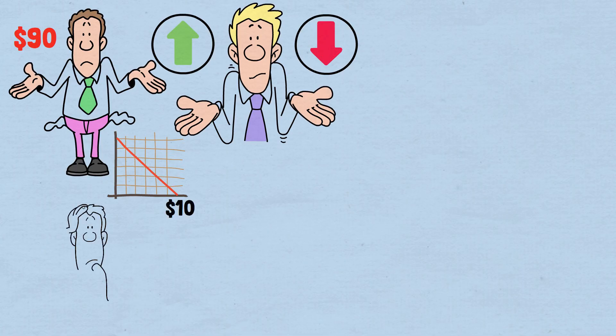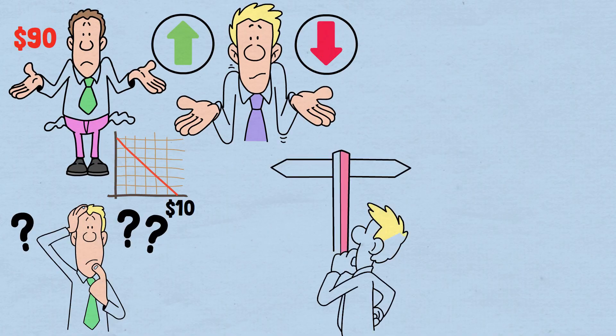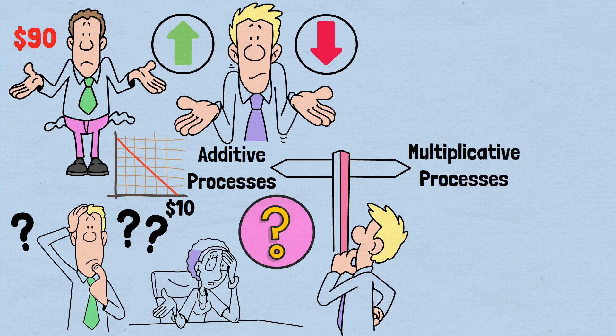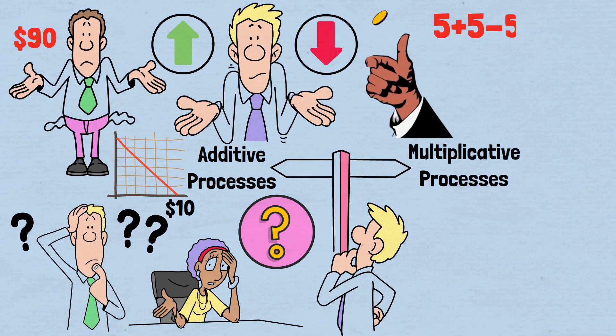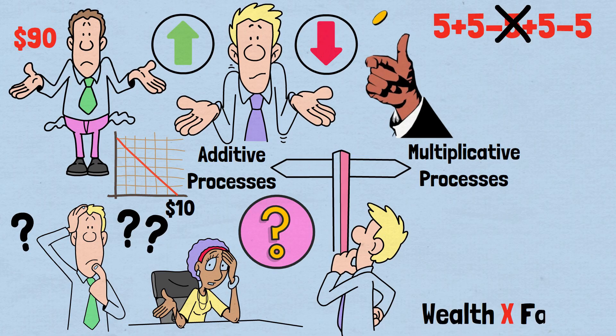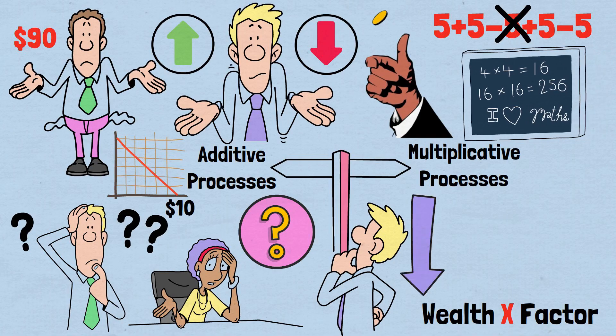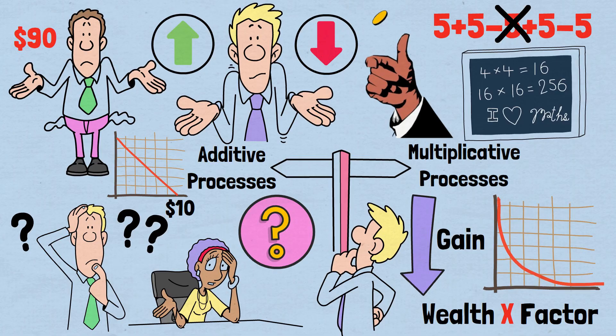How is this possible when every individual flip seemed favorable? The answer lies in understanding the difference between additive and multiplicative processes, a distinction that reveals why our intuitive arithmetic fails us so catastrophically. In our coin game, each flip doesn't add or subtract a fixed amount. Instead, it multiplies our entire wealth by some factor. This multiplicative nature creates a mathematical environment where the lower we go, the less we can gain. But losses compound in devastating ways.